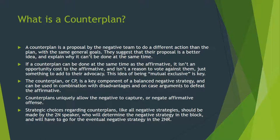So what are we talking about? A counter plan is a proposal by the negative team to take a different action than the plan to achieve the same general goals. They will suggest that their proposal is a better idea and explain why it can't be done at the same time. If a counter plan can be done at the same time as the affirmative, it's not a reason to vote against them — there's no opportunity cost to the plan. It's just a nice idea they can add to their advocacy. This idea is called being mutually exclusive: the inability to do things at the same time.